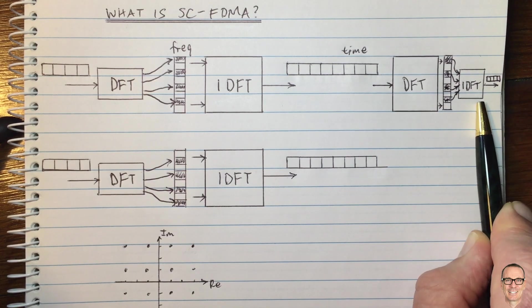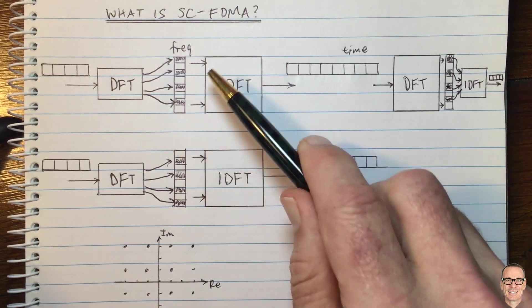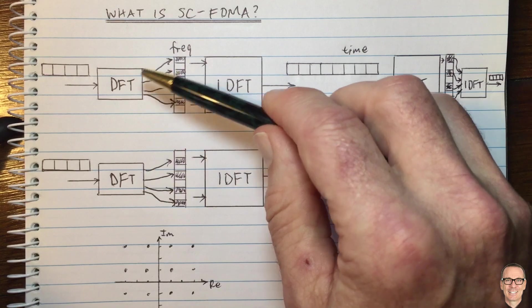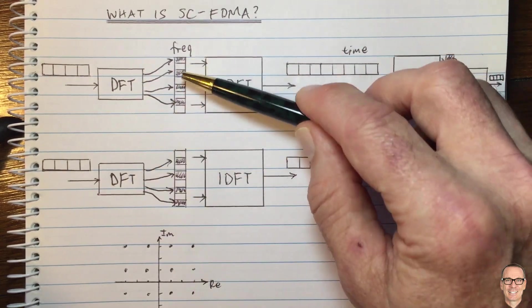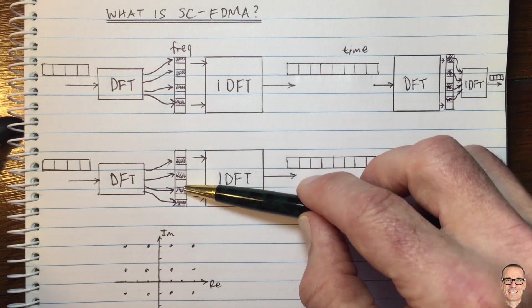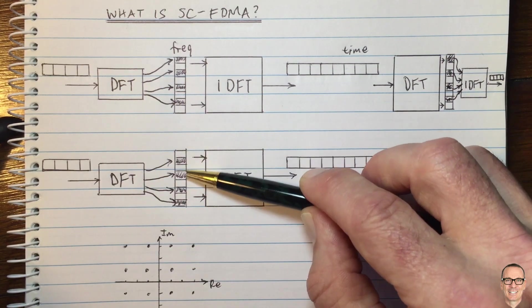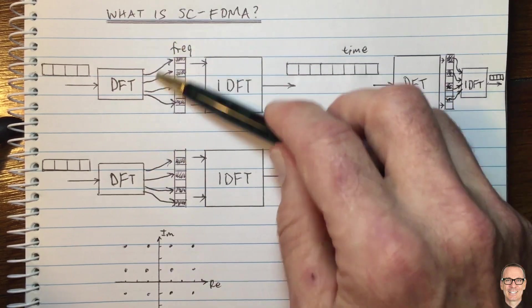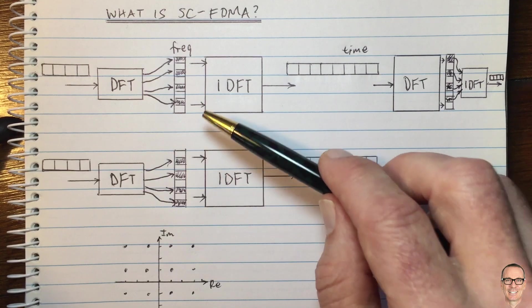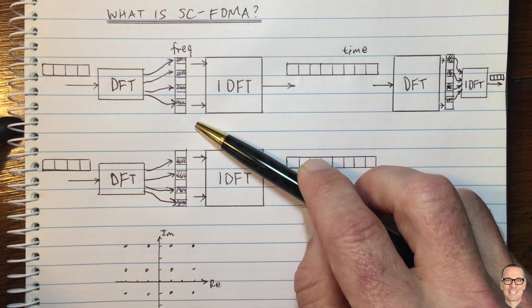So that's why you don't want to use SCFDMA on the downlink. Another reason why you don't want to use it on the downlink is because this process of doing them separately for each user is quite restrictive on the way that you're allocating data into the subchannels and the way you're using your resource block. If you do it together combined, then you've got much more flexibility and ability to be more efficient in the use of that resource block. And that's what you want on the downlink.